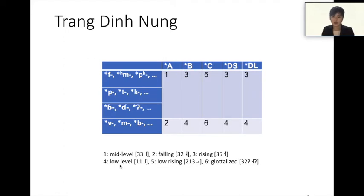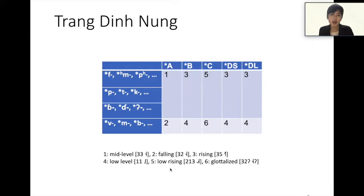This table shows the patterns of tonal development of Chanding NUN. Chanding NUN has six tones: tone 1 is middle level, tone 2 is falling, tone 3 is rising, tone 4 is low level, tone 5 is low rising, and tone 6 is glottalized.